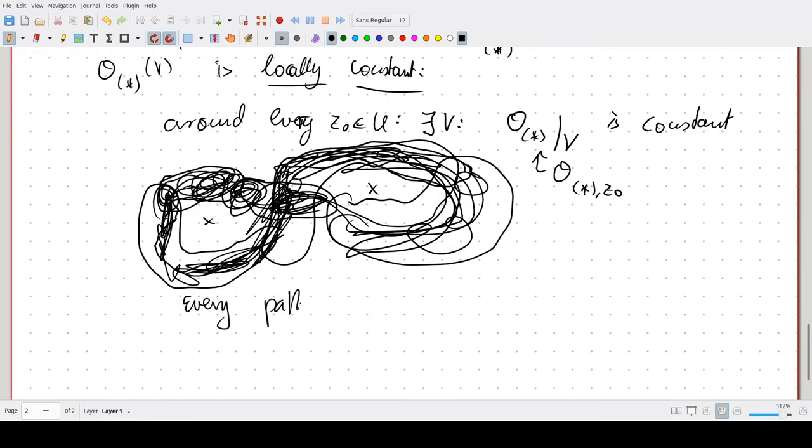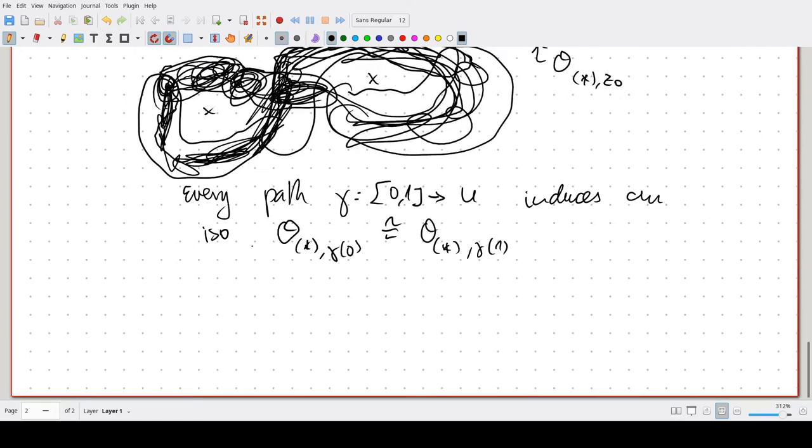And in fact, the isomorphism only depends on homotopy classes, and you get a functor from the fundamental groupoid of U to the category of finite dimensional vectors.